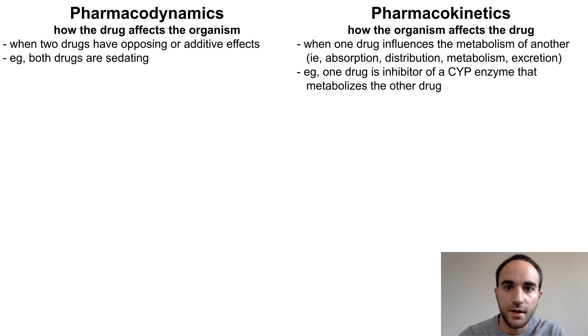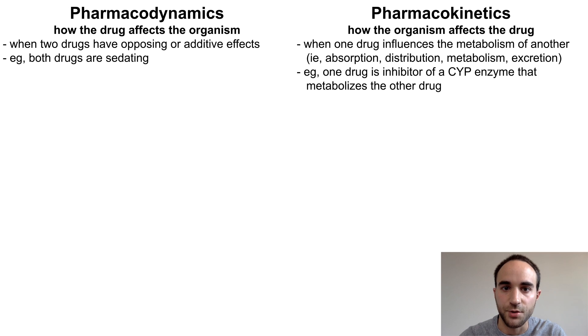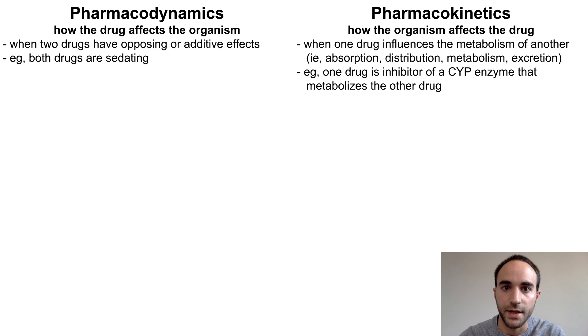For example, if one drug is the inhibitor of a CYP enzyme that metabolizes a second drug, then the second drug will not be metabolized as quickly.